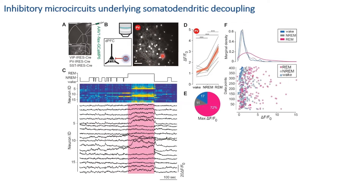We found that contrary to pyramidal cell bodies, parvalbumin interneurons significantly increase their activity during REM sleep — in all recorded mice there is hyperactivation during REM. 72% of all recorded parvalbumin interneurons show their maximum activity during REM sleep. This suggests that parvalbumin interneurons, known to target cell bodies, may be responsible for inhibiting pyramidal neuron cell bodies during REM by increasing their activity and consequently silencing the soma.